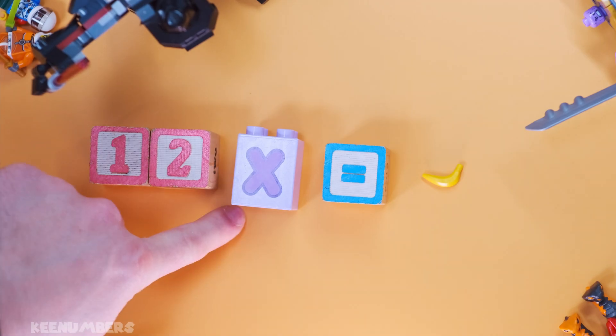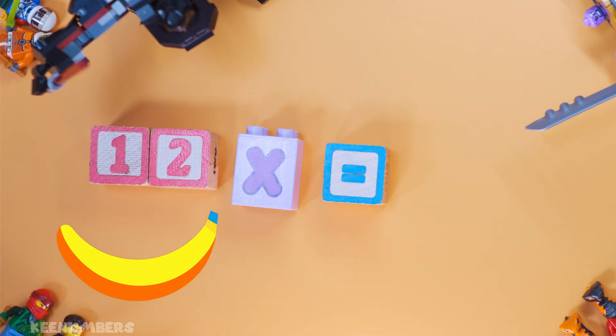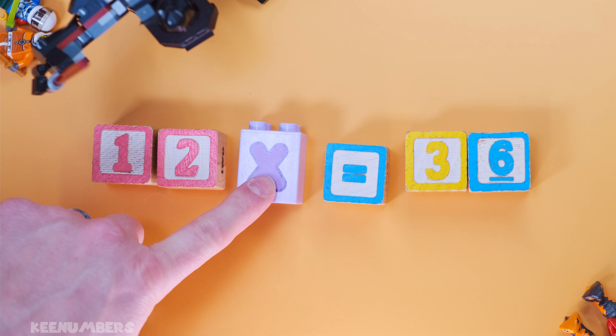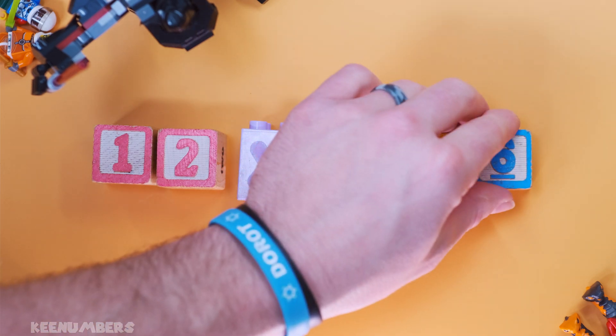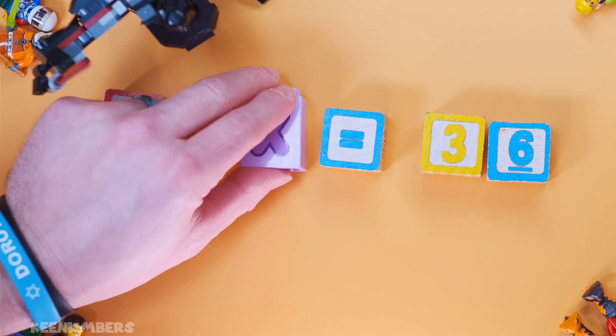So 12x equals banana. No, not banana. We'll say 12x equals 36. Where did that banana come from? 12 times some number is equal to 36. Well, what could that number possibly be? It's a one-step equation.